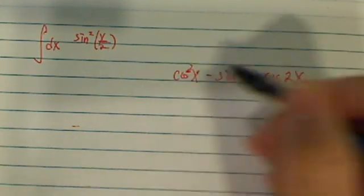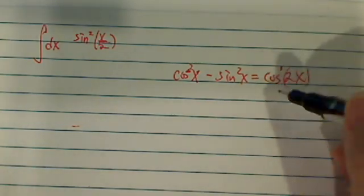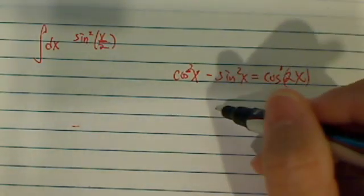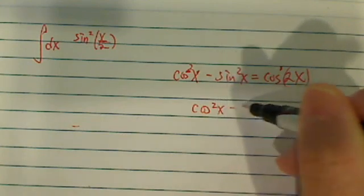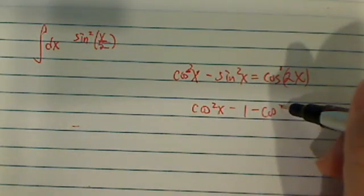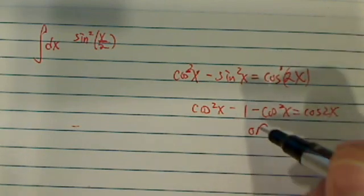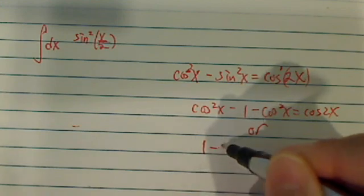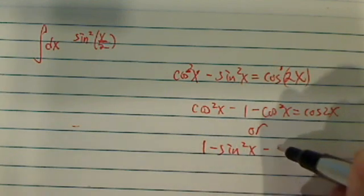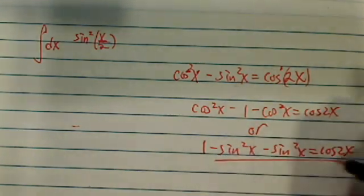So basically we need to take the power of square down to the power of 1. Now if this is true, that means cosine squared x minus 1 minus cosine squared x equals cosine of 2x. Or alternatively, you can have 1 minus sine squared x minus sine squared x equal to cosine of 2x as well.